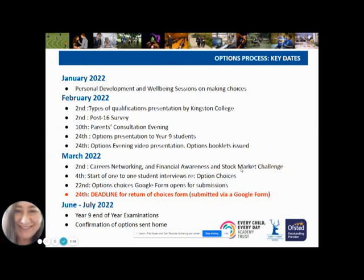Once the forms and choices are all in, we spend time trying to allocate these and fit them into the timetable. If there are any problems, between April and July that is when I will meet with students individually and contact parents if needed, so we can make sure everything is going to work as planned. In June we have the end of year 9 exams, and following this, early July, we will be writing home confirming the option choices that have been allocated.